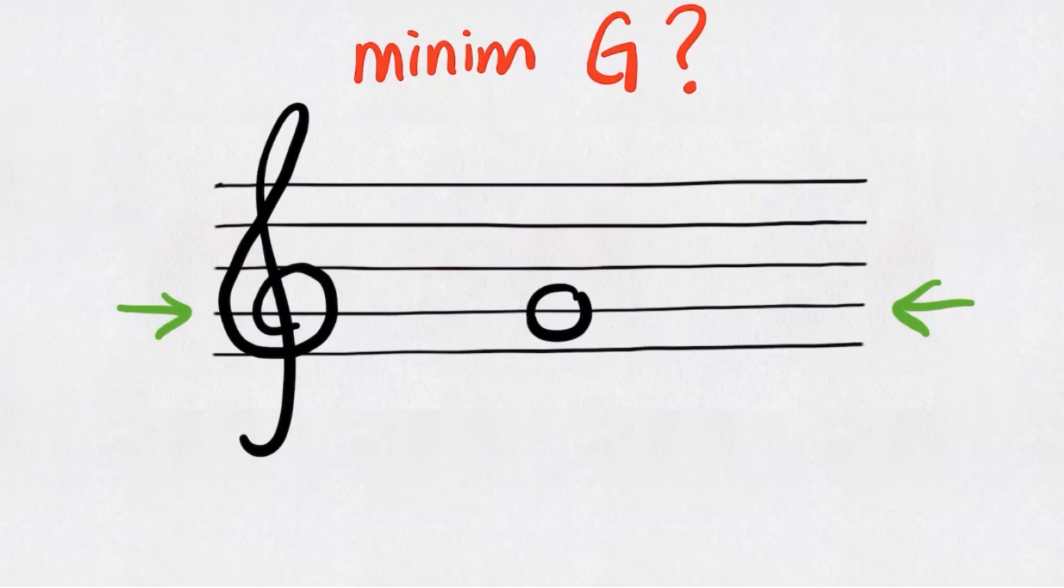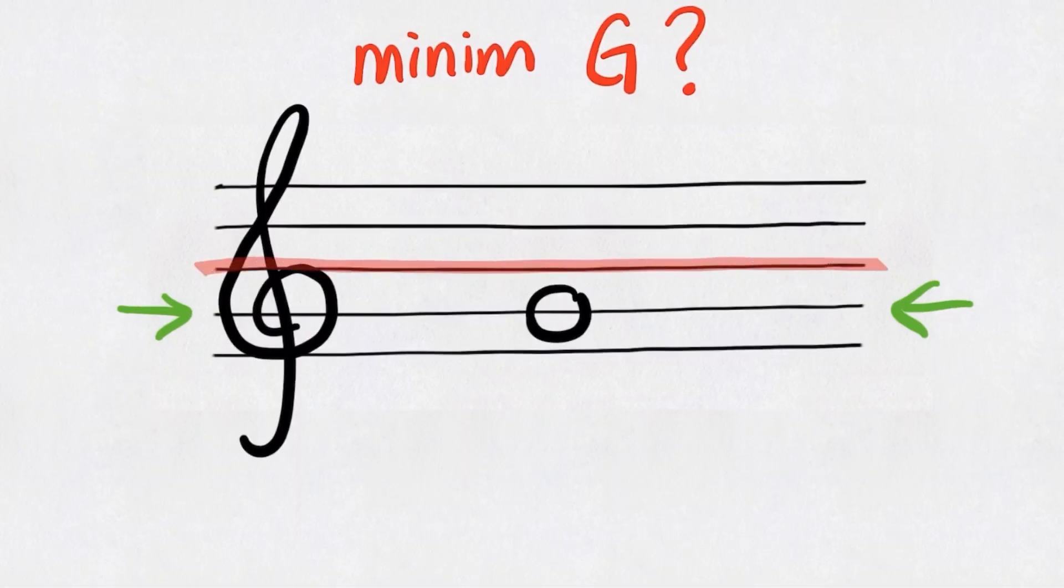And now for the stem. Remember, any notes below the middle line will have the stem going up from the right side. And here we go. That's one minim G.